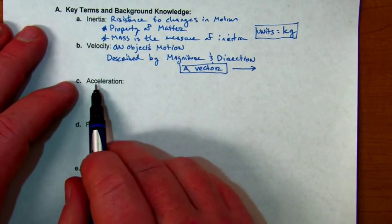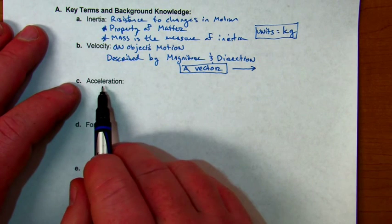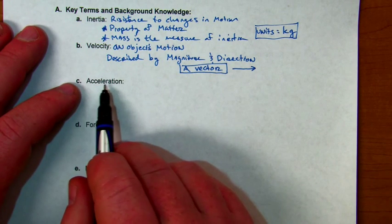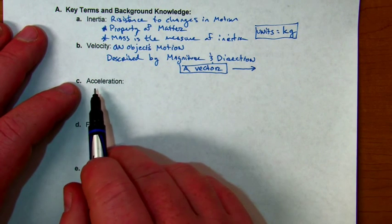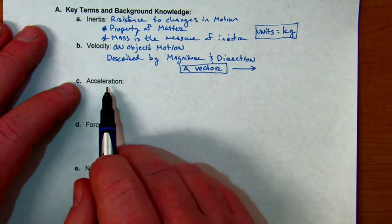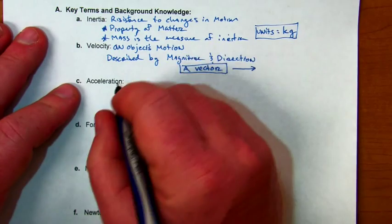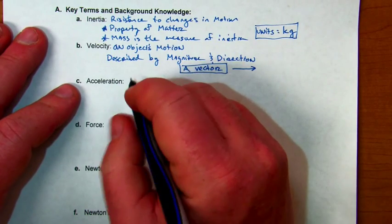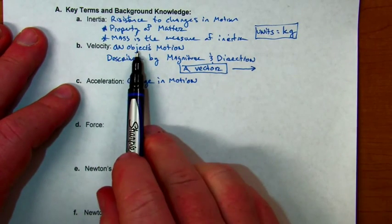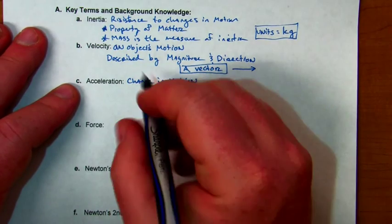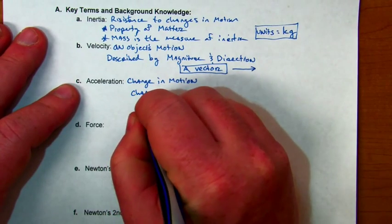Acceleration, in your car, usually means speeding up, and we use the term decelerate to slow down. In physics, we have a much more specific definition. Acceleration is any change in motion. Since an object's motion is its velocity, acceleration can be thought of as a change in velocity.